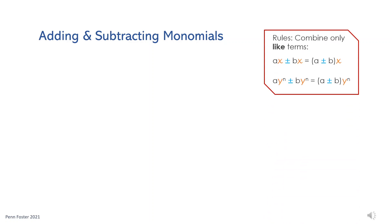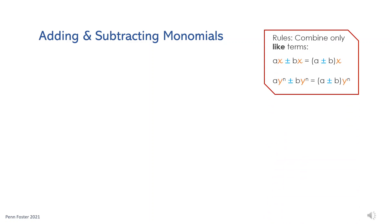Before adding or subtracting expressions, check if all terms are like terms. Terms are like if they have the same exact variable or variables. In this problem, the two terms are like because each has an x as their variable. In this case, simply combine the coefficients of the like terms by addition or subtraction. The coefficients are added: 5 and negative 8 is negative 3. Write out the answer as negative 3x. Note that the variables were not added. When adding or subtracting like terms, one occurrence of the common variable is brought to the final answer.